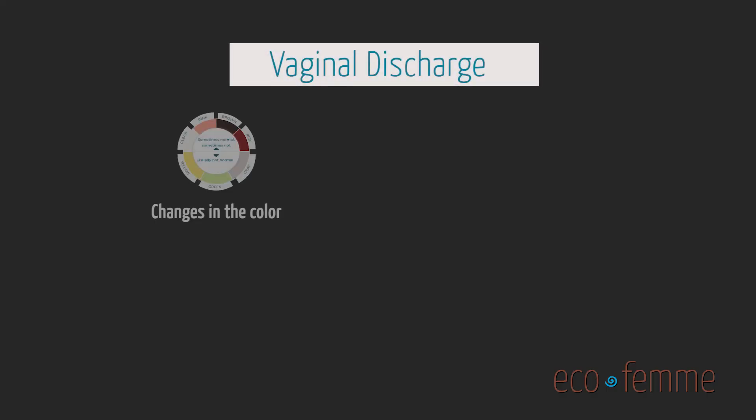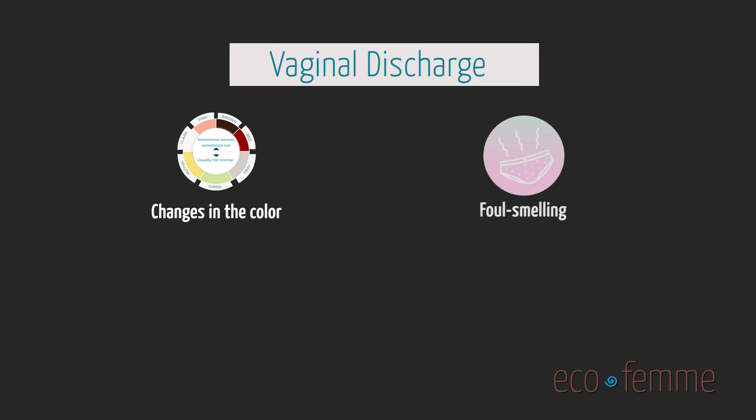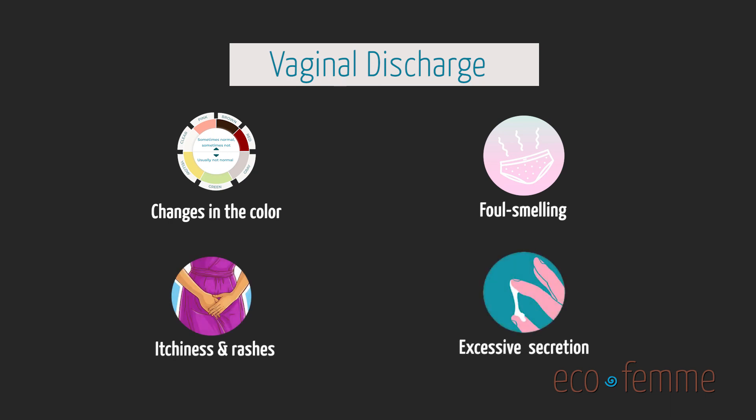Whenever you have your period with severe pain and fall sick, although these symptoms don't necessarily mean you have a severe problem, it is always good to see a doctor. In addition, you also need to notice your vaginal discharge — check if there is any change in color, foul smell, itchiness, rashes, or excessive secretion of vaginal discharge.